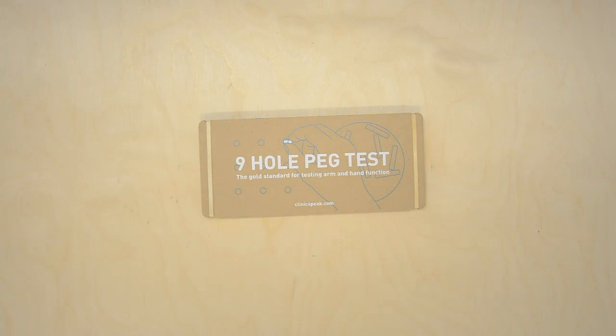The 9-hole peg test is the most widely accepted way of monitoring arm and hand function in clinical trials. This cardboard version allows you to self-monitor at home.